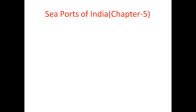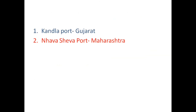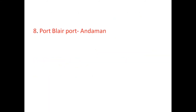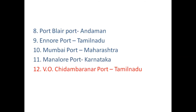Chapter Five: Sea Coast of India. India has a coastline of 7,516.6 kilometers, forming one of the biggest peninsulas in the world. Around 95 percent of India's trading by volume and 70 percent by value is done through the sea. The major ports of India include: Navasheva Port; Mormugao Port, Goa; Visakhapatnam Port; Paradip Port; Haldia Port, Kolkata; Ennore Port, Tamil Nadu; Mumbai Port, Maharashtra; New Mangalore Port, Karnataka; V.O. Chidambaranam Port, Tamil Nadu; and Kolkata Port, West Bengal.